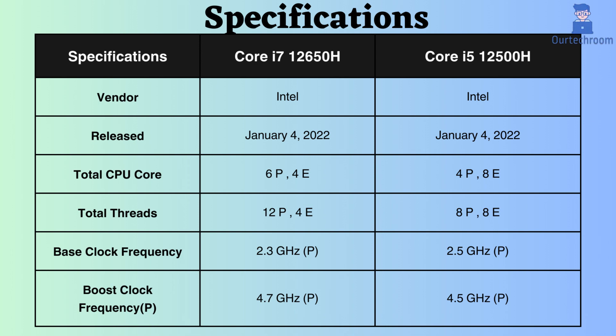Furthermore, the Core i7-12650H boasts 12 performance threads and 4 efficiency threads, whereas the Core i5-12500H has 8 performance threads and 8 efficiency threads. Having more cores and threads can result in enhanced multitasking performance, accelerated processing of multi-threaded workloads, and improved utilization of hardware resources.